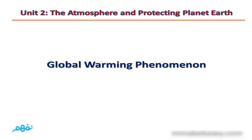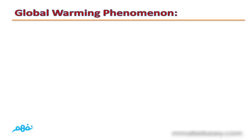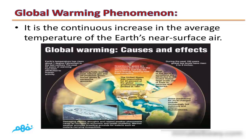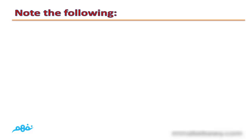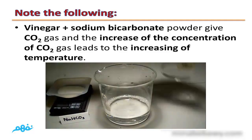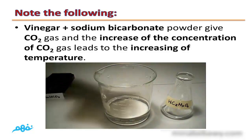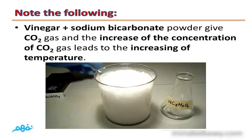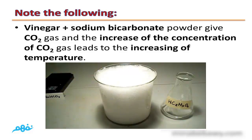The second part of this lesson is the global warming phenomenon. Global warming is the continuous increase in the average temperature of the Earth's near-surface air. The temperature of planet Earth increases year after year. If we add vinegar to sodium bicarbonate powder, it gives carbon dioxide gas, and an increase in the concentration of carbon dioxide leads to an increase in temperature.